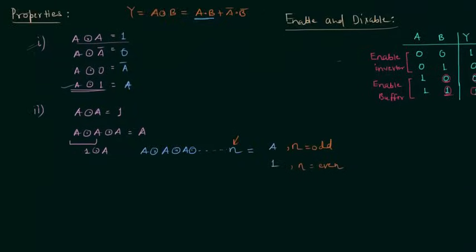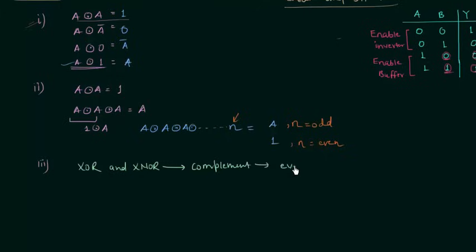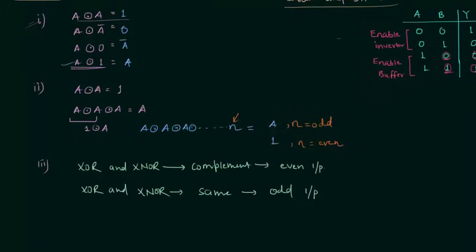Property 3: XOR and XNOR are not always complements. They are complements of each other only when the number of inputs is even. When the number of inputs is odd, XOR and XNOR give the same result.